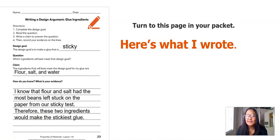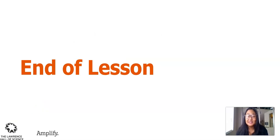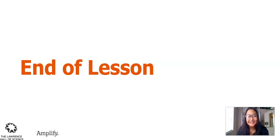I wonder if you chose the same ingredients or different ingredients, and what you said for your evidence. It will help you plan to make your first glue. After writing about your claim and evidence and which ingredients you'd like to use, I think we're ready to start making our glue. At the end of our lesson today, we learned a lot from looking at the design cycle, making a plan, thinking about ingredients for our glue, and writing a design argument to help us create our first glue. I hope you had fun, and I'll see you next time.